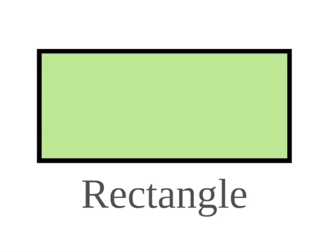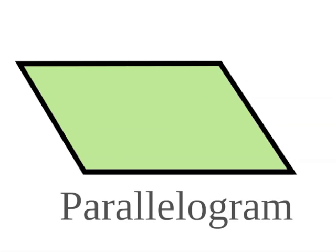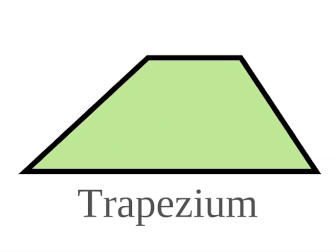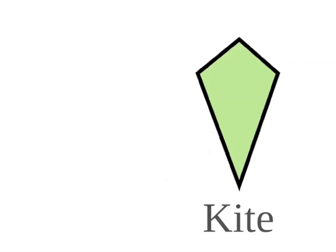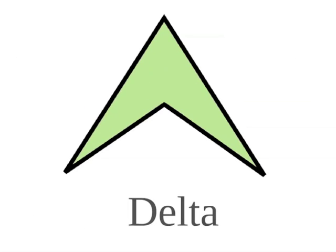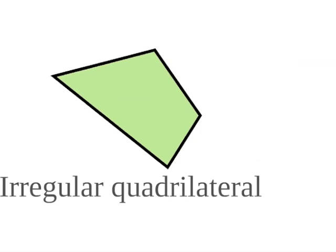Then if we look at the irregular quadrilaterals, we have a rectangle. A parallelogram. A trapezium. A rhombus. A kite. A delta. And an irregular quadrilateral.